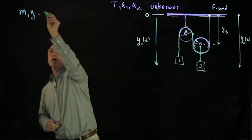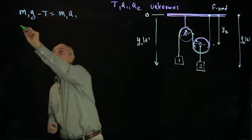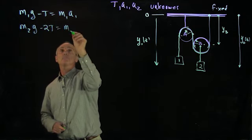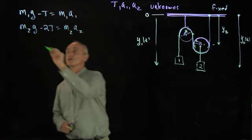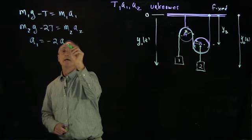We had m1g minus T was m1a1, and we had m2g minus 2T was equal to m2a2. And we also had the constraint condition between the accelerations that a1 was minus 2a2.